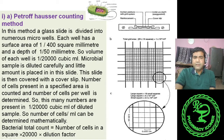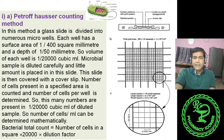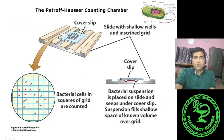The microbial sample contains numerous cells, so if we put them into this slide, we cannot count them because of the overpopulation of cells. So we dilute it suitably — 1 to 10, 1 to 100, 1 to 10,000, and so on. After dilution, a small amount of sample is taken in the glass slide, covered with a cover slip, and observed under the microscope. You will see the cells present in each small square.